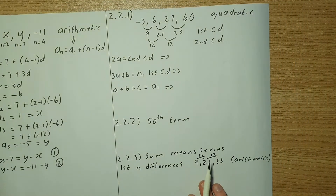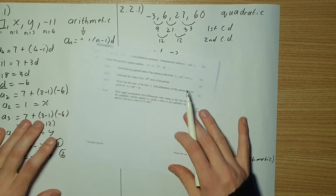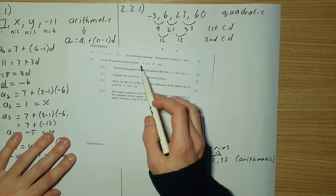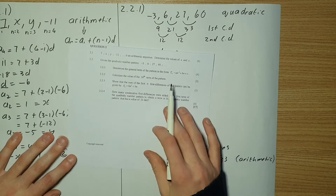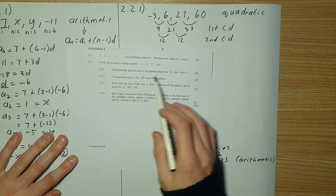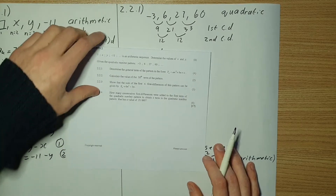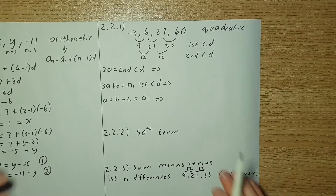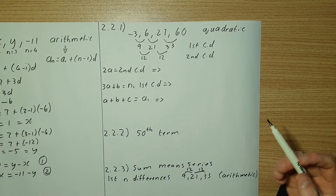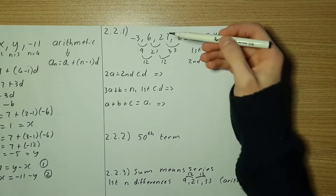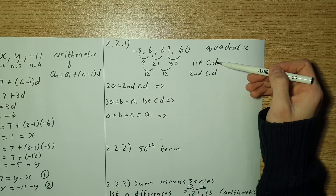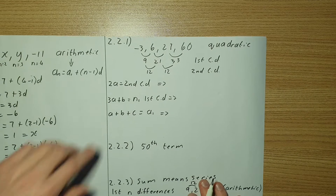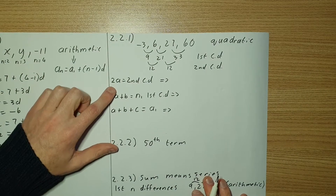Moving on to question 2.2 — they tell us that we have a quadratic number pattern. Question 2.2.1 asks us to determine the general formula for the quadratic pattern. Remember a quadratic has two sets of common differences. We have the first set of common differences and our second set of common differences. The process to find your quadratic formula starts with step one.